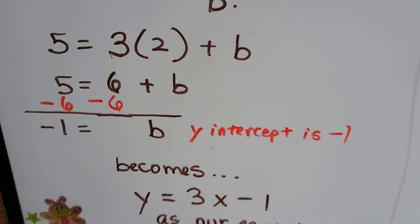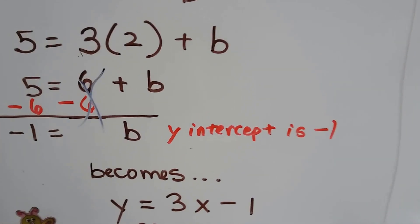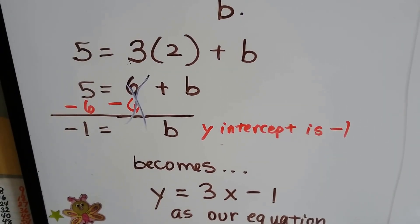So we use our additive inverse and we subtract 6 from each side, and that's going to get rid of that 6. And 5 take away 6 is a negative 1, so we know our y-intercept b is a negative 1.